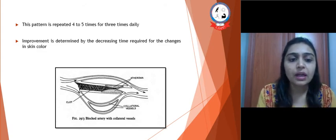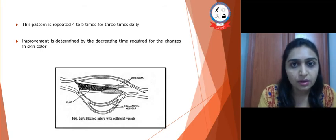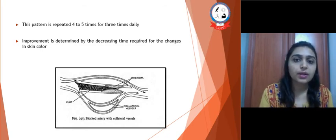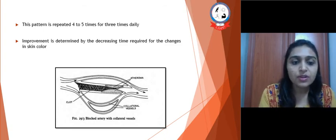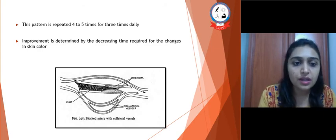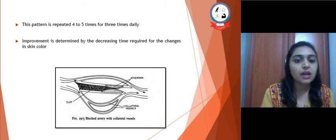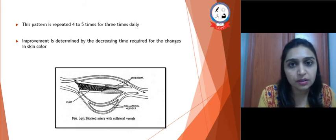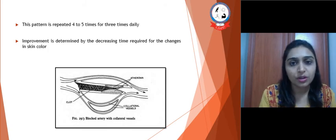Improvement is determined by the decreasing time required for changes in skin color. A figure of collateral vessels is shown. The way a person may benefit from Buerger's exercises is through development of collateral vessels, which provide blood to the distal extremities. The decreasing time required for changes in skin color indicates improvement and possible development of collateral vessels.